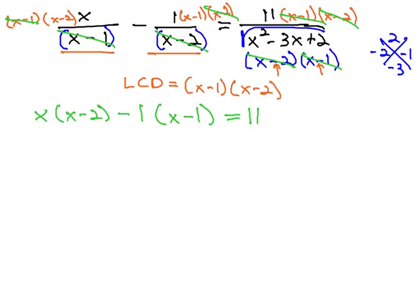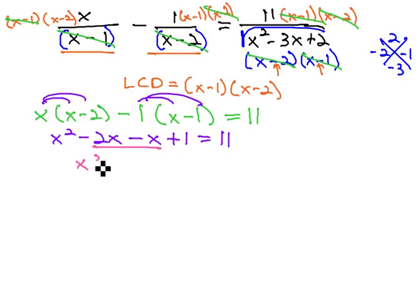We now have an equation we can solve by first distributing through the parentheses, giving us x squared minus 2x minus x plus 1 equals 11. Combine like terms to give us x squared minus 3x plus 1 equals 11.